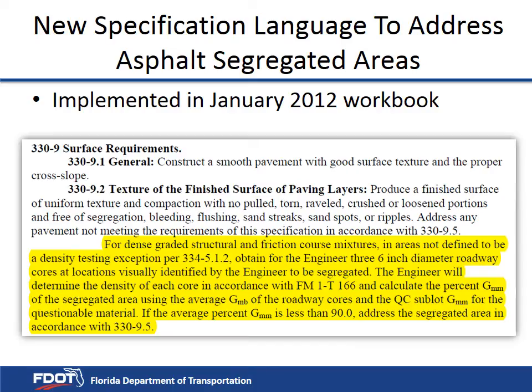Since 2012, the FDOT Standard Specifications Section 330 contains language that allows department personnel to ask the contractor for three cores at locations visually identified to be segregated. The District Materials Office will provide support by testing the cores for density and providing the project administrator with the testing results. This language explains how the material needs to be addressed based on the testing results.